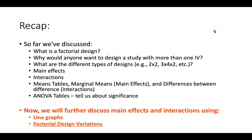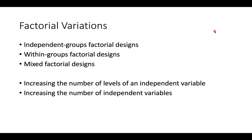Now we're going to move on to the end of this section and discuss some variations on factorial experimental designs. We'll distinguish between an independent groups factorial design, a within-groups factorial design, and a mixed factorial design — also referred to as between-subjects, within-subjects, and mixed designs. Then we'll talk about what happens when we increase the number of levels for our independent variables, and what happens when we add a third independent variable.